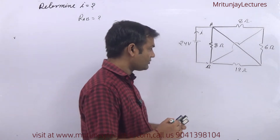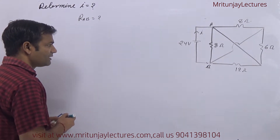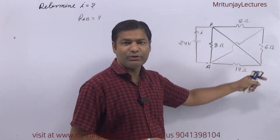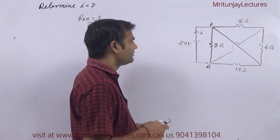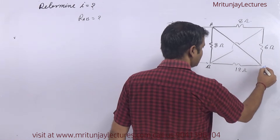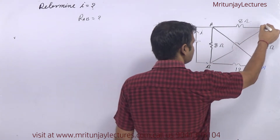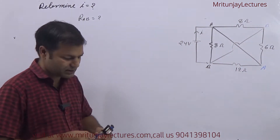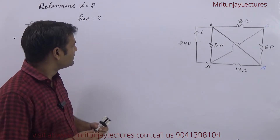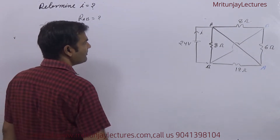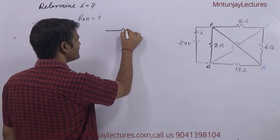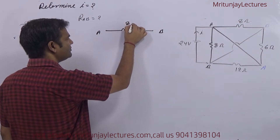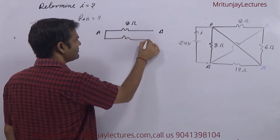First of all, redraw another circuit. If this one is A, then this point also represents A because both are at the same potential. This one is B, then this point also represents B. So redraw the circuit — that is A point and that is B point — eight ohm, and this one is also eight ohm.